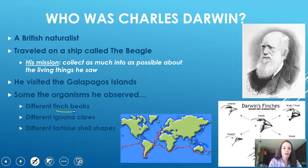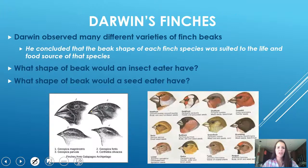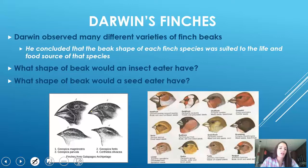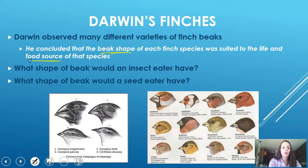We all know him for his finch beaks, but most people don't think about the fact that he also looked at iguana claws and tortoise shell shapes. There were many varieties of finch beaks that he noticed on the Galapagos Islands, and he concluded that the beak shape of each finch species was suited to its food source.